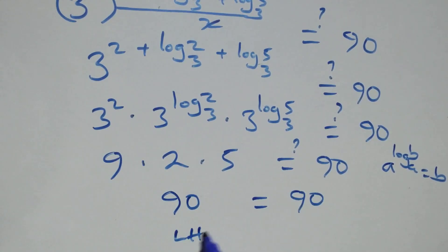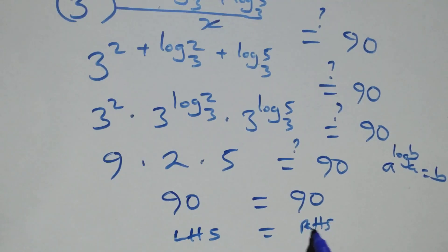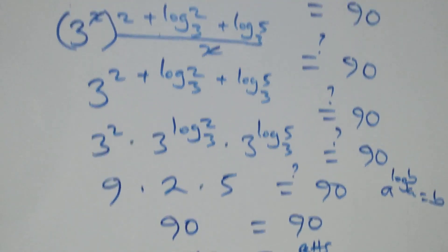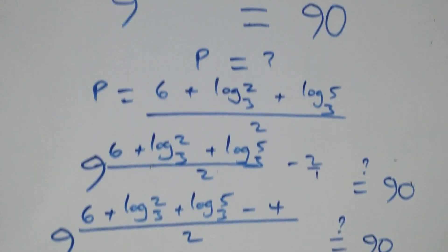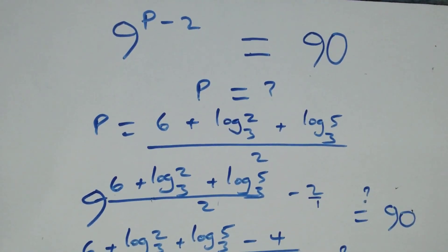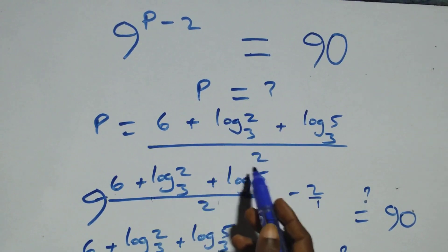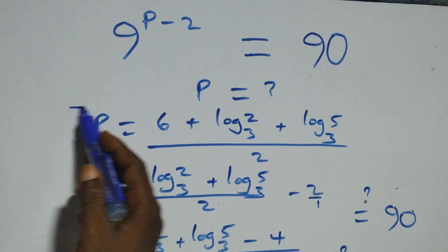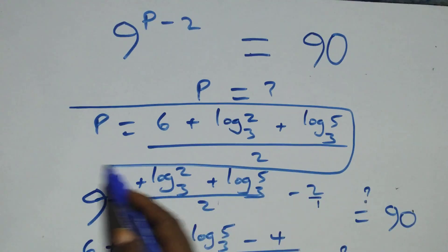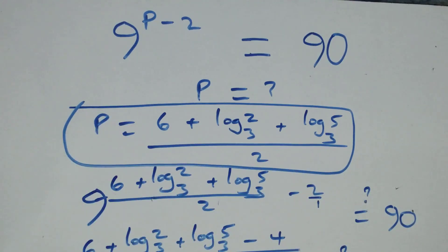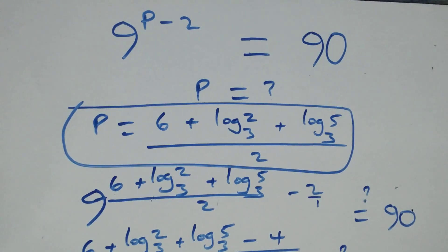The left-hand side equals the right-hand side, and therefore we conclude that p equals to (6 plus log₃2 plus log₃5) all over 2 satisfies the given problem. Thank you for watching — don't forget to subscribe for more videos, turn on the notification bell, share this video, and give a thumbs up. See you next class, bye for now.